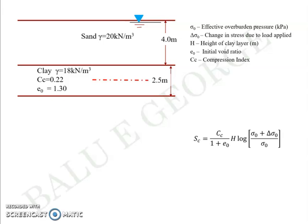So assuming that the unit weight of water gamma w is equal to 10 kilonewton per meter cube, the sand now will have a saturated unit weight of 20, with submerged unit weight 20 minus 10 equal to 10. Likewise, clay will have 8 kilonewton per meter cube.